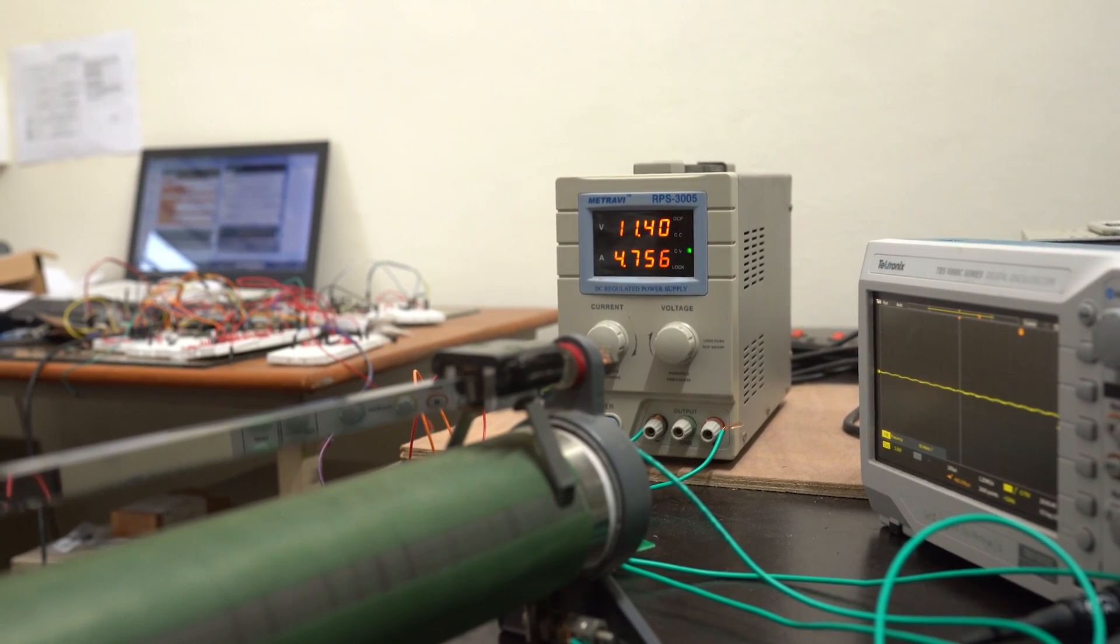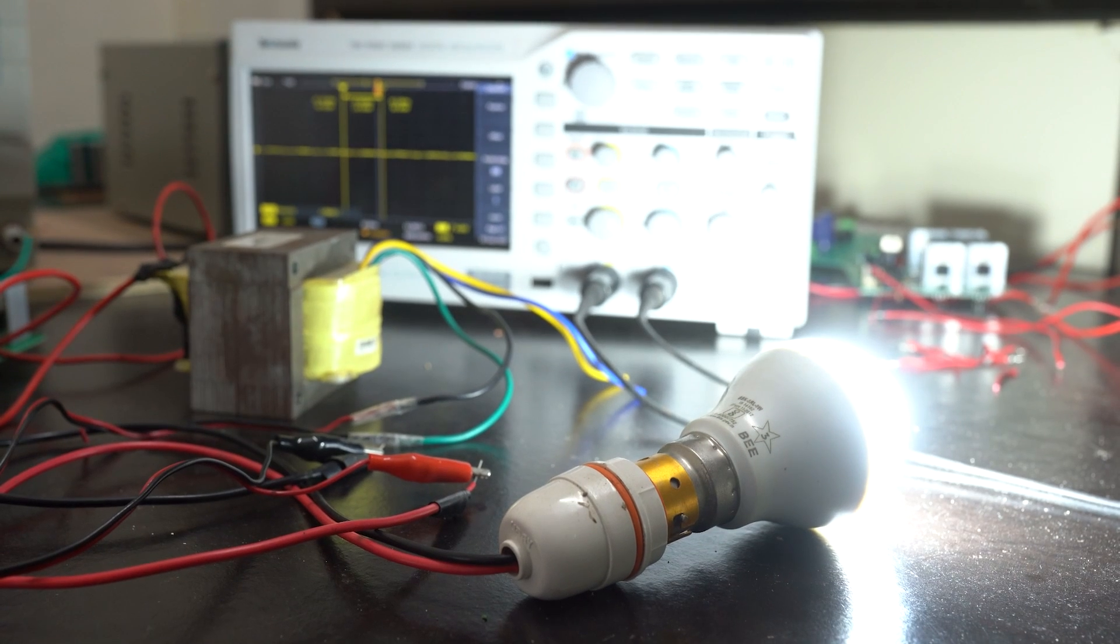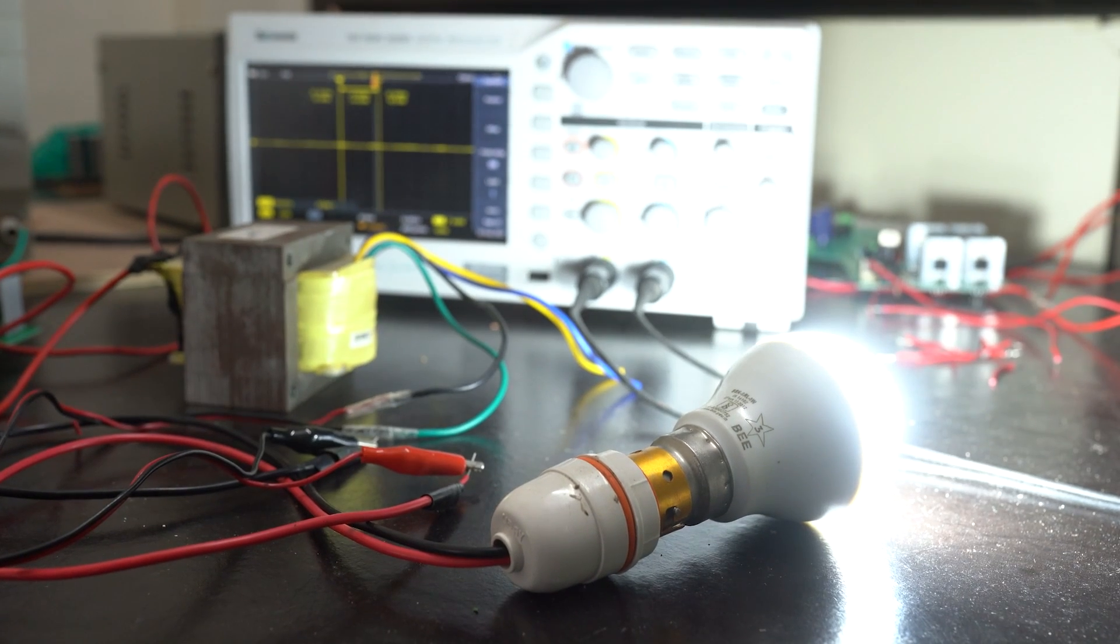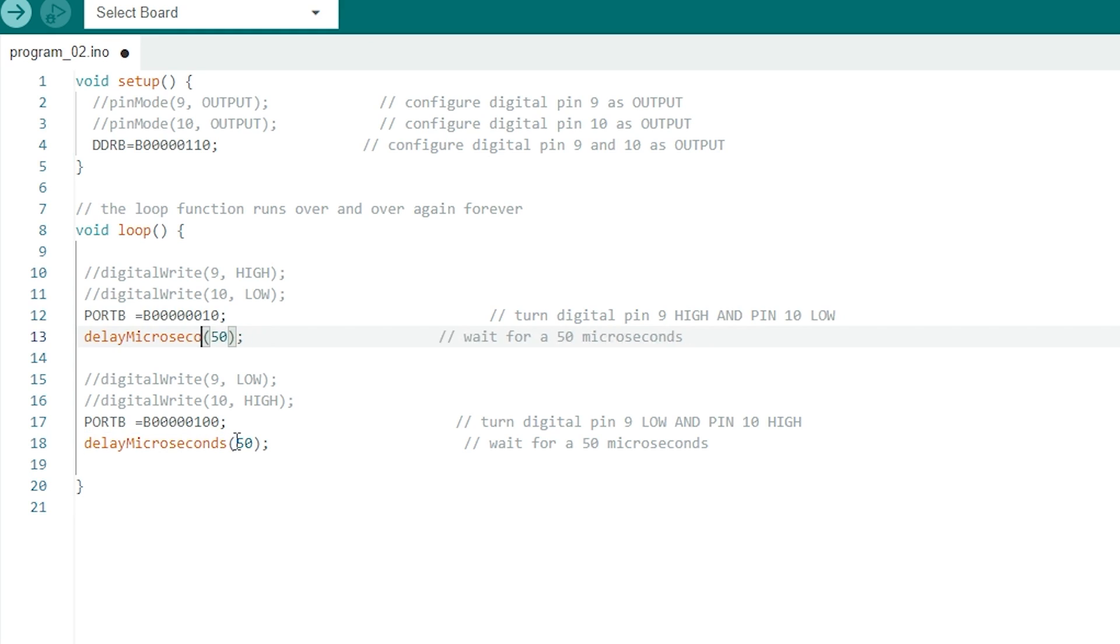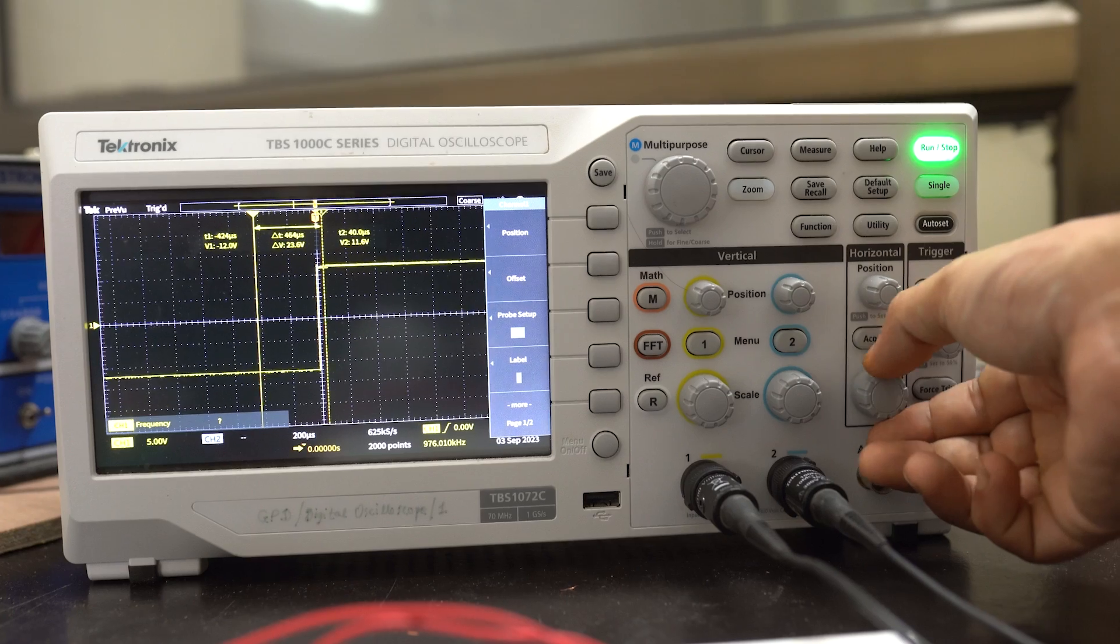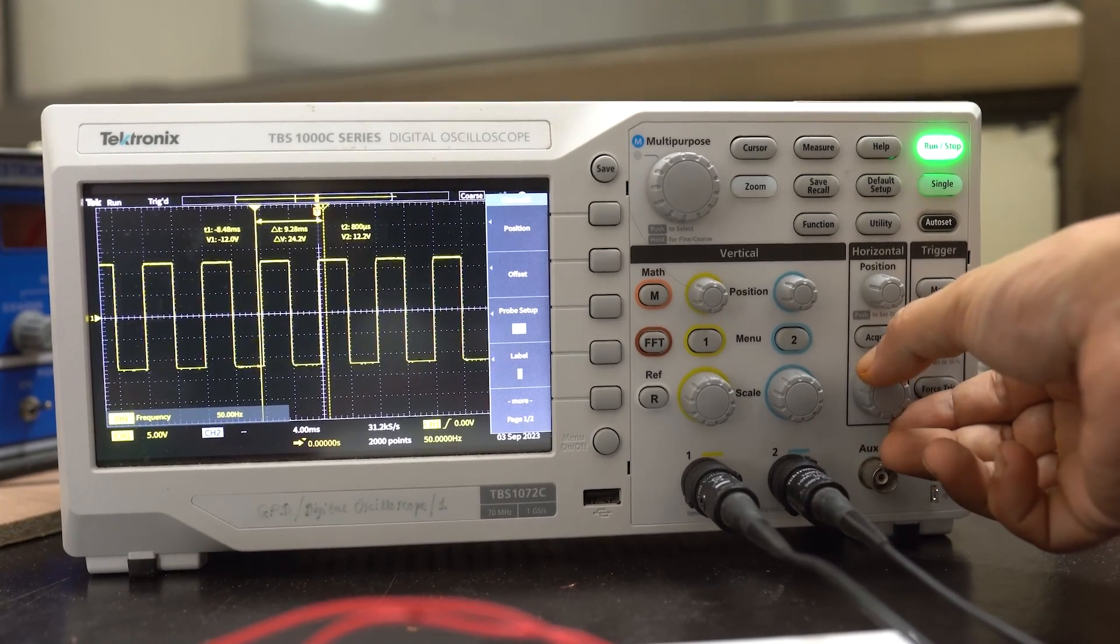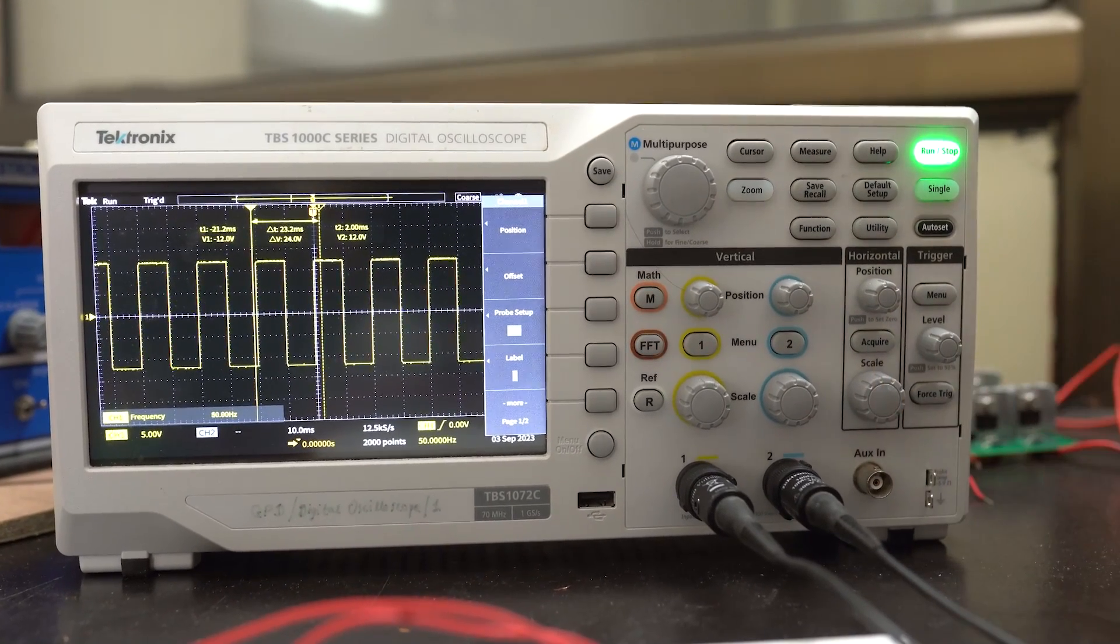Now to supply any 230-volt load such as an LED lamp, we change the delay value in the program to 10 milliseconds to get an output frequency of 50 hertz. The output voltage waveform can be seen in the oscilloscope. The output frequency is constant at 50 hertz.